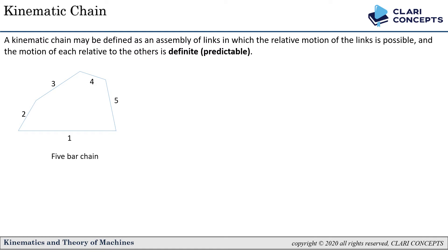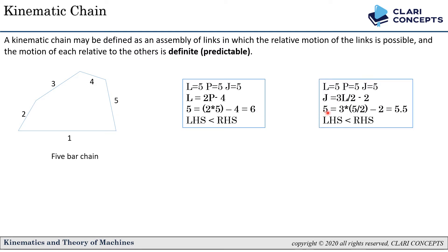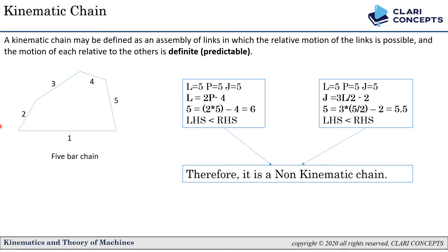For the five bar chain: l = 5, p = 5, j = 5. Applying the equations, LHS is less than RHS — we get 5 versus 6 for the first equation. For the second equation, 5 is less than 5.5, so LHS is also less than RHS. We conclude that the five bar chain is a non-kinematic chain, meaning relative motion is present between links but it is not definite or predictable.